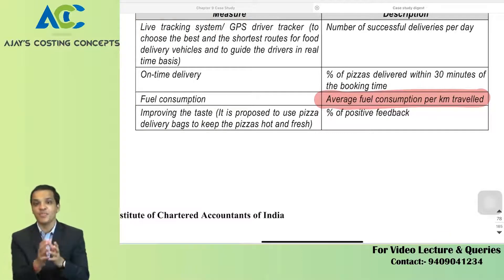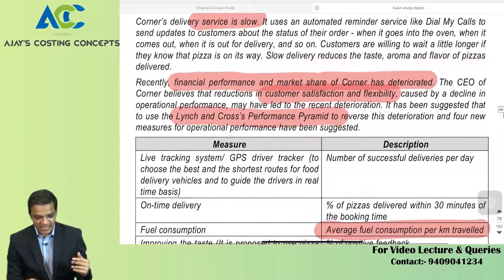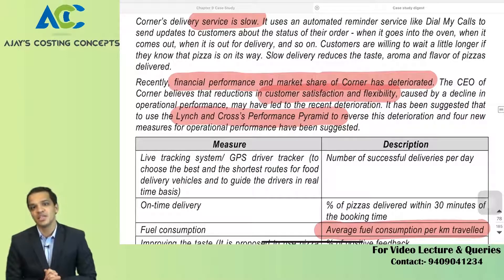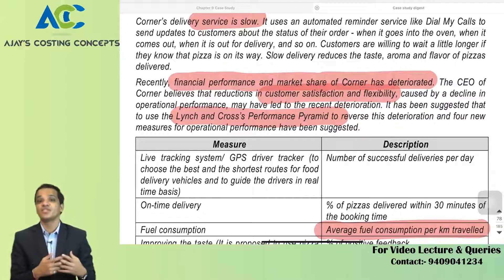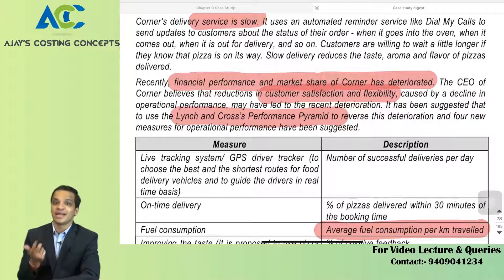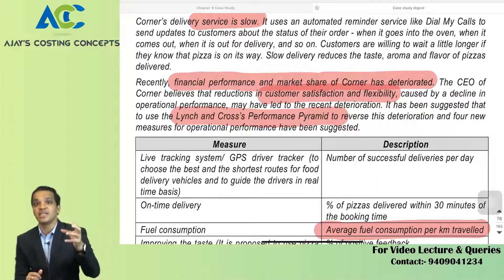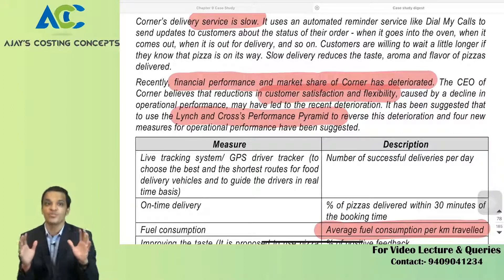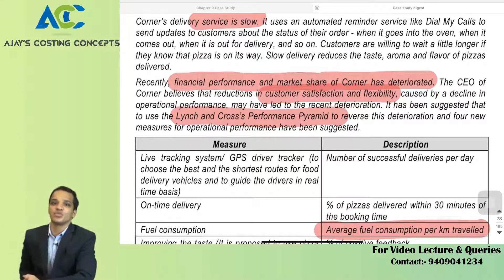Why performance pyramid and not other models? Because the question itself mentioned Lynch and Cross performance pyramid should be considered. But even if it had not been given, we would still have considered it because the question used terminologies of corporate vision, market share, financial path, customer satisfaction, flexibility, quality, and delivery — all of which are key terminologies of the performance pyramid. With this, we finish case scenario 1 and move to the next question.